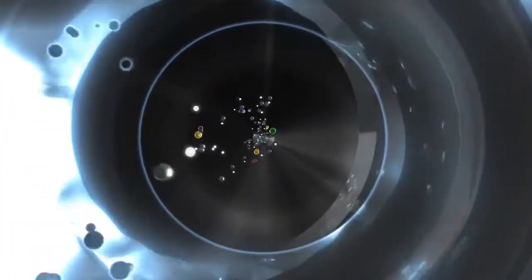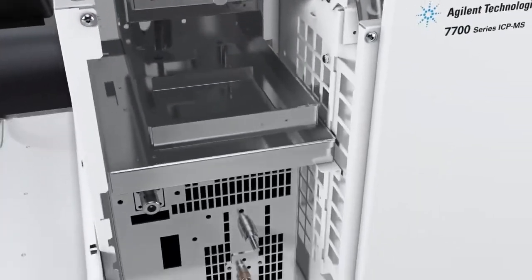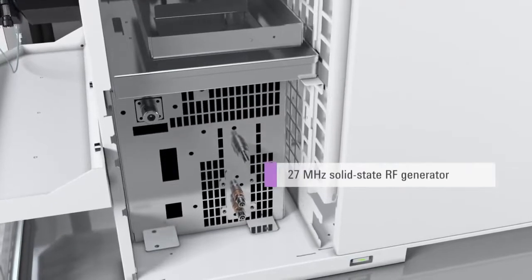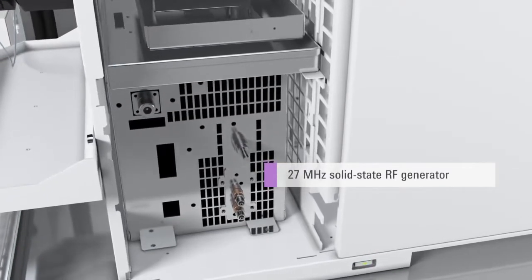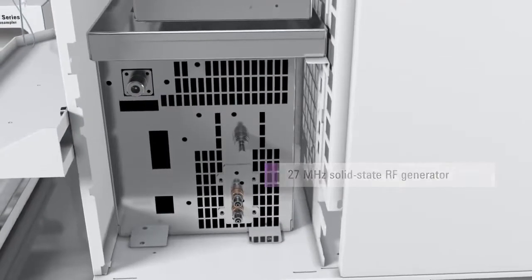The plasma of the 7700 is powered by a unique digital drive solid state 27 MHz RF generator, which provides the highest power transfer efficiency of any ICP-MS.